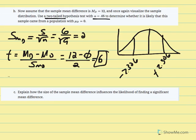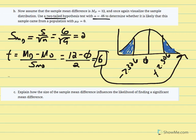In this case we would reject the null. The probability of obtaining a t value from a mean difference of 12 is less than our alpha of 0.05.